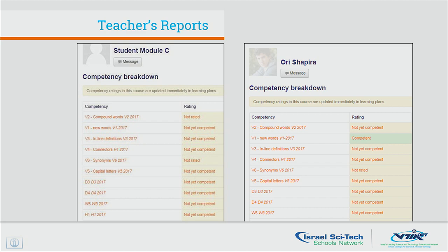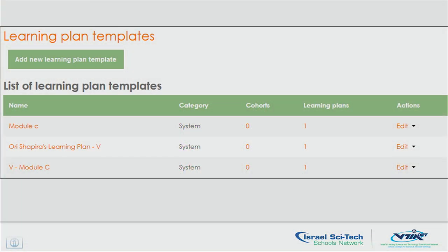On the left side, there's a student who hasn't done his learning yet and there's nothing to show about his competency. On the right, on the other hand, I can see that Aoi Shapira, one of the students, has completed the new words V1 competencies. According to the competencies, we went on and made a learning plan. The teacher can identify weakness or lack of competency among students and add assignments accordingly. As each activity has a unique competency list, the teacher can set either an individual learning plan or a whole class learning plan according to the learning needs.